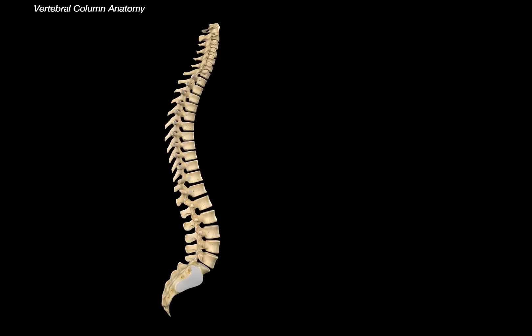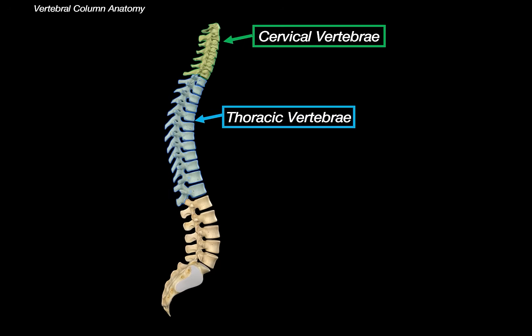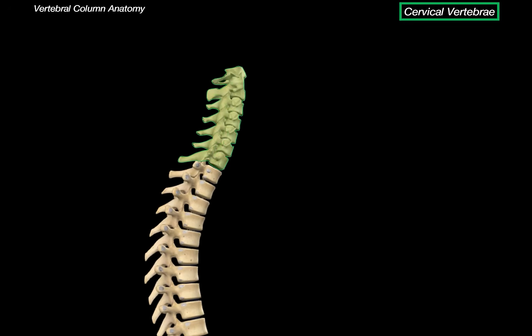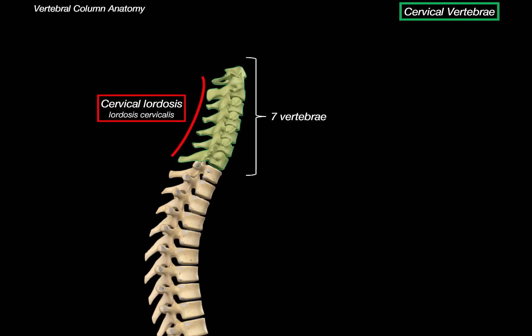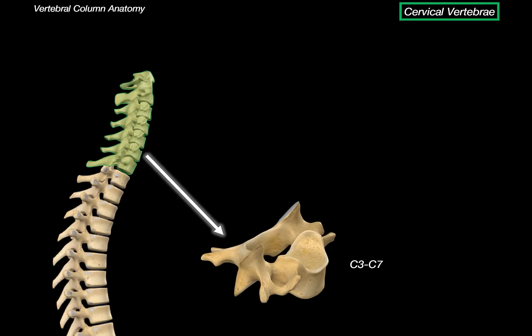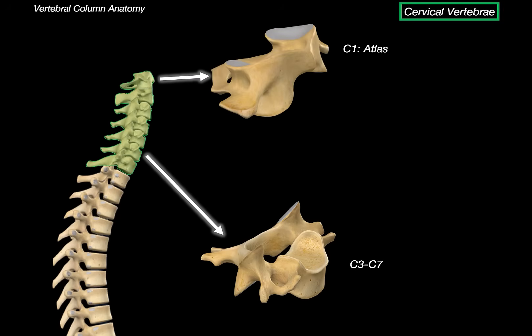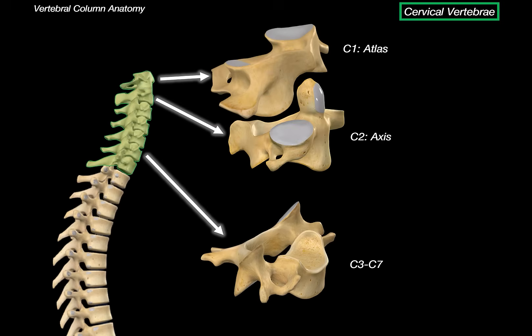So, we saw that the vertebrae across the spine share some common basic structures, but there are specific structures that make vertebrae distinct based on where they are located. Most of the seven cervical vertebrae share some specific structures. Thoracic vertebrae has some specific structures for the ribs, and lumbar vertebrae has some specific structures, and even the sacrum and coccyx. The cervical vertebral column consists of seven vertebrae and forms the cervical lordosis. The cervical vertebrae generally share some morphological features across C3 to C7. The first cervical vertebrae, C1, is called Atlas, and it greatly differs from the basic structures of the vertebrae as it does not have a vertebral body.